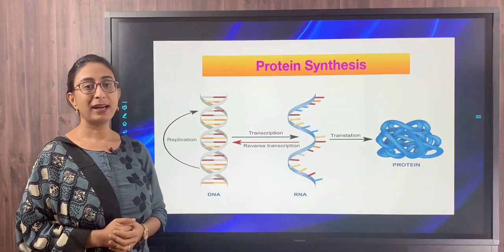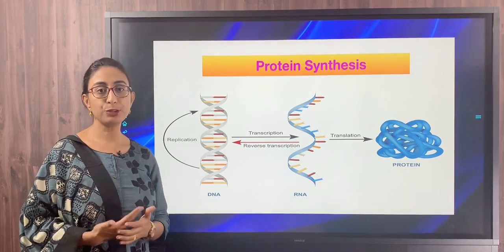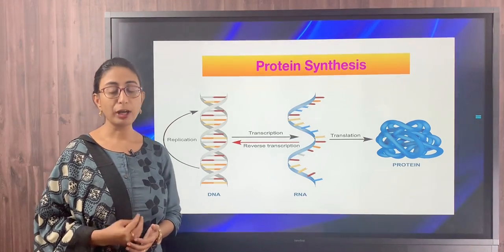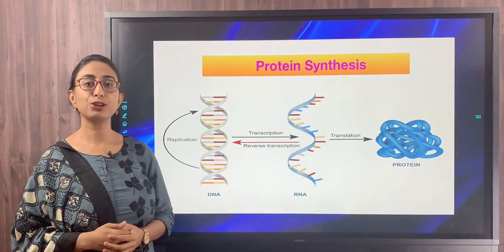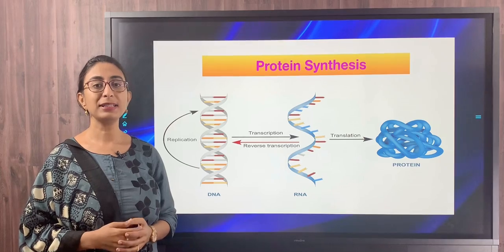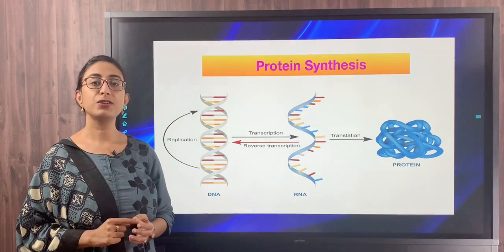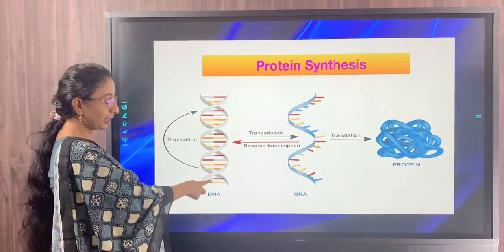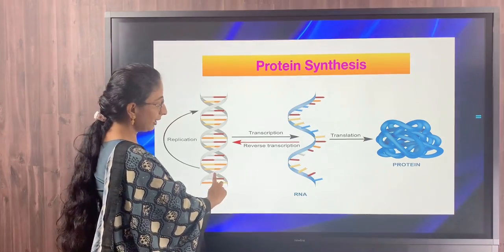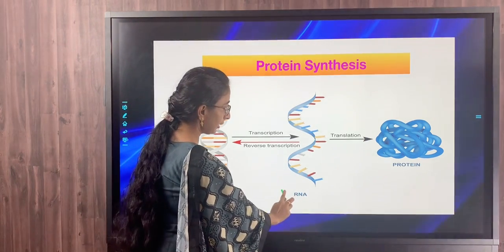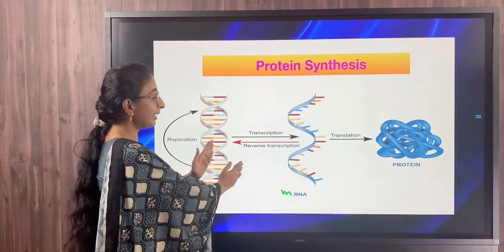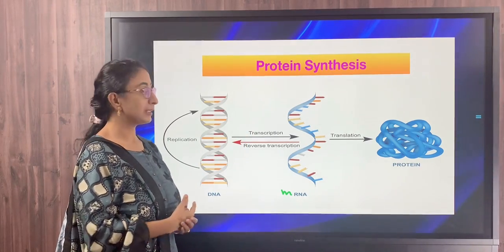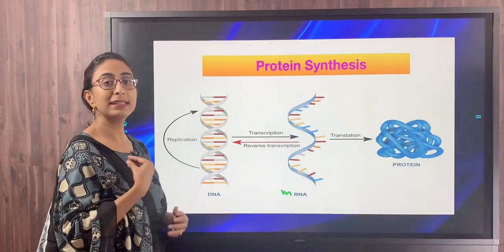Proteins are made up of amino acids — just like many cells come together to form a tissue, many amino acids come together to form a protein. The production of protein by an individual cell is called protein synthesis. Protein synthesis happens in two stages: the first is transcription and the second is translation. Transcription is the process by which DNA gets converted to mRNA, and it is assisted by the enzyme RNA polymerase.